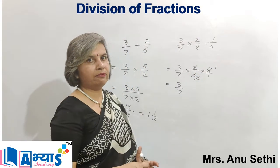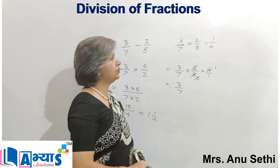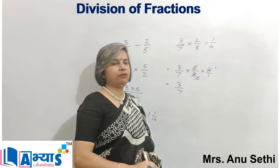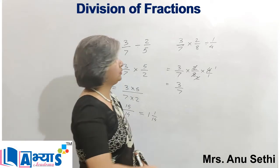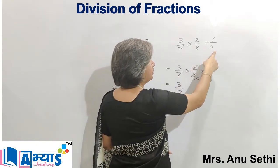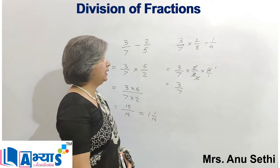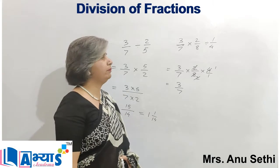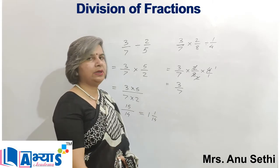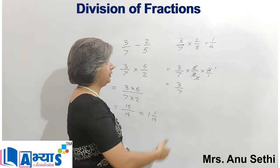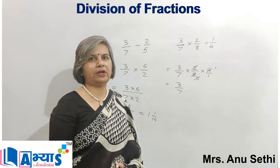Whenever we have an expression with both multiplication and division, we follow BODMAS and solve the division first. When solving the division, we take the reciprocal of the term and try to cancel out common factors to simplify the fraction, and then we perform multiplication — multiplying numerators with numerators and denominators with denominators. The answer will be 3 by 7. This is how we can perform division in case of fractions.